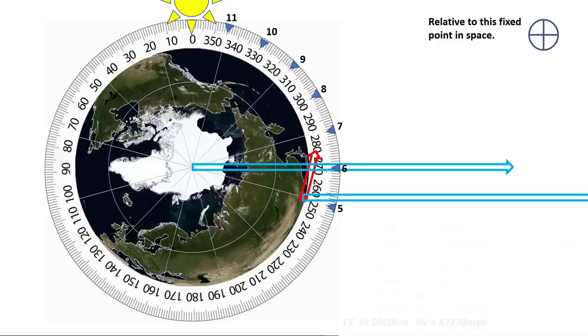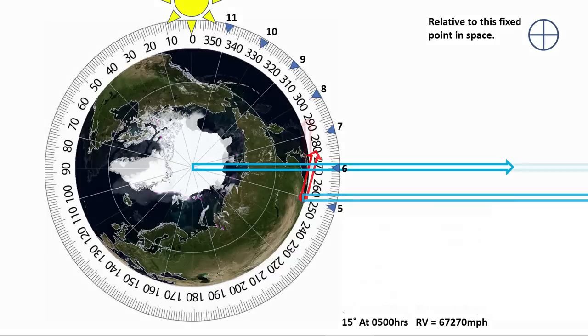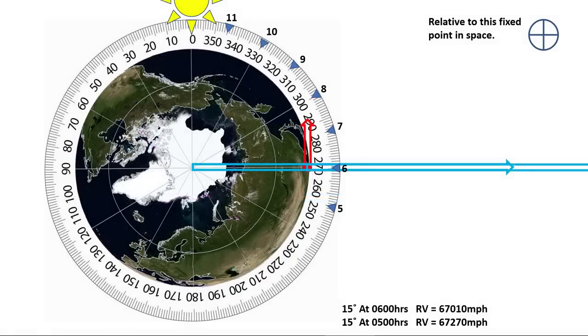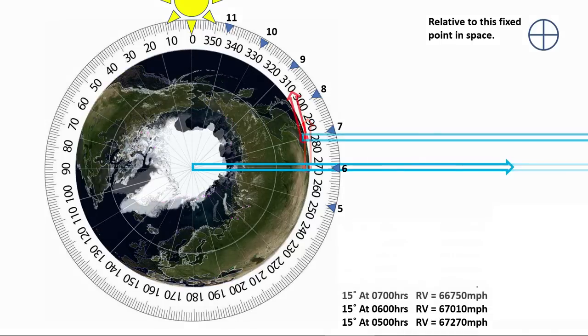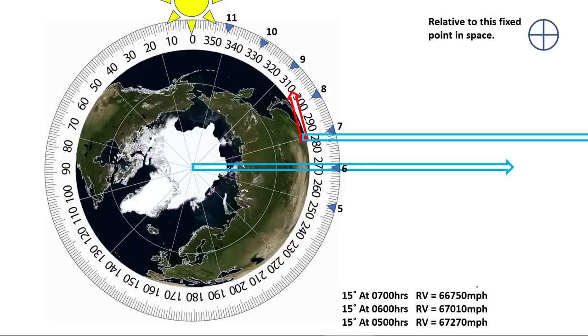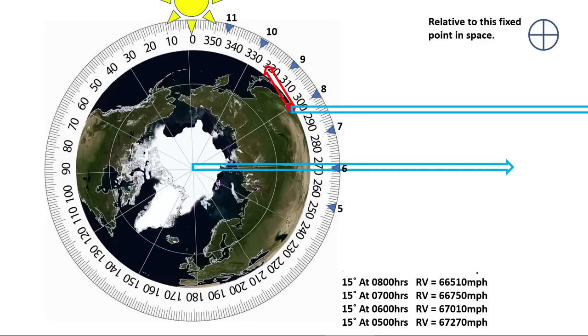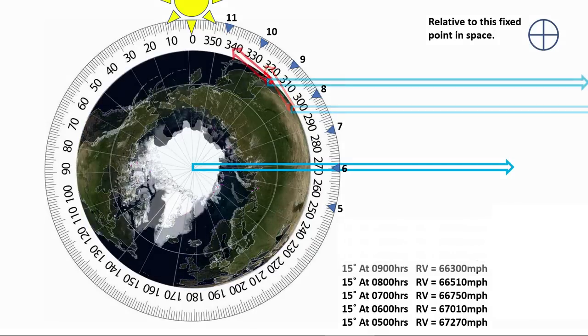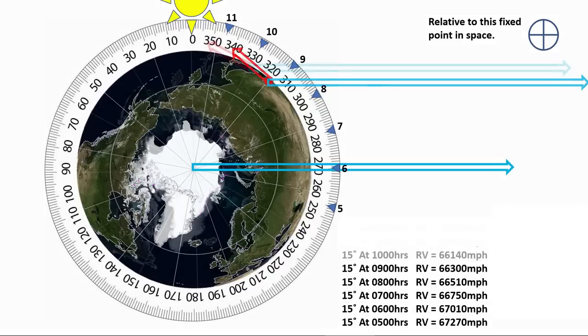At 0500 hours, your resultant velocity will be 67000270 mph. Then 6700010 mph at 0600 hours, and so on for each hour. Your velocity on the journey around the sun would be constantly changing.